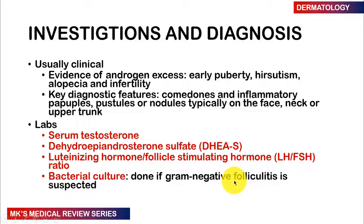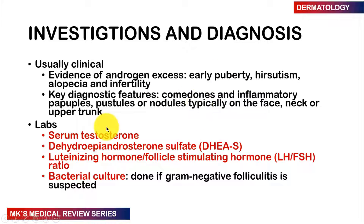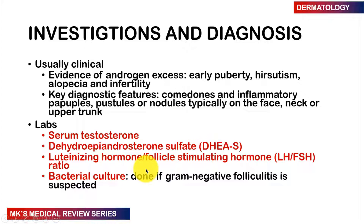Diagnosis is primarily clinical. Evidence suggesting androgen excess includes early puberty, hirsutism (excessive hair growth), alopecia (hair loss), and infertility. Key diagnostic features are comedones and inflammatory papules, pustules, or nodules typically present on the face, neck, and upper trunk, common in adolescence but also seen in adults. Labs may include serum testosterone, dehydroepiandrosterone sulfate, and LH-to-FSH ratios. If gram-negative folliculitis is suspected, a bacterial culture may be performed.